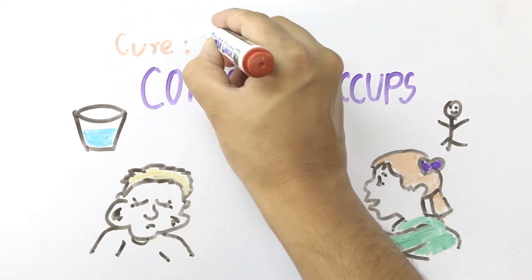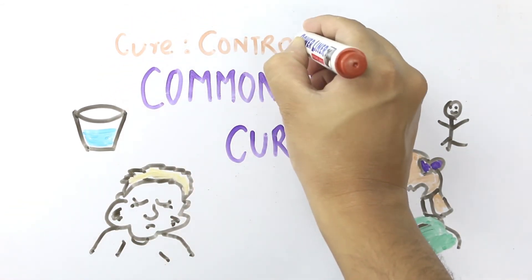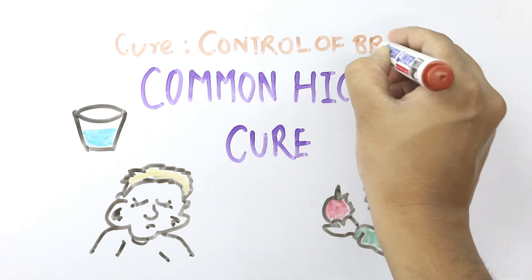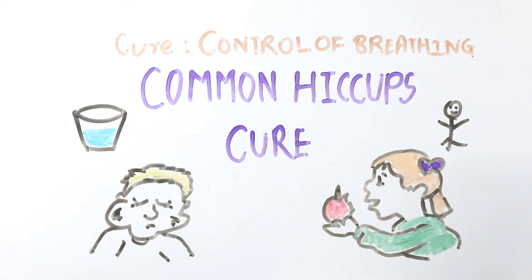In reality, the ones that actually work do so by helping you get control of your breathing. So it doesn't really matter what you eat or how you drink the water, it's just the interruption of your breathing pattern that does the trick. Holding your breath usually works best, since it's the most direct way of controlling your breathing muscles.